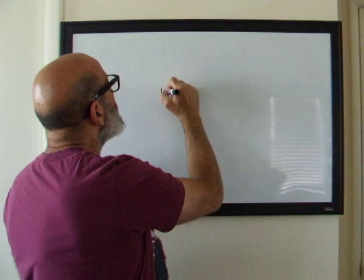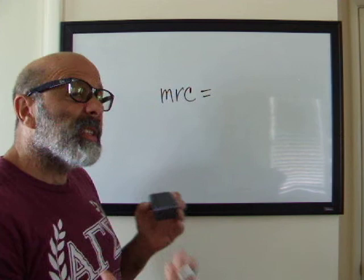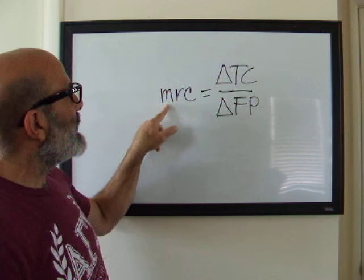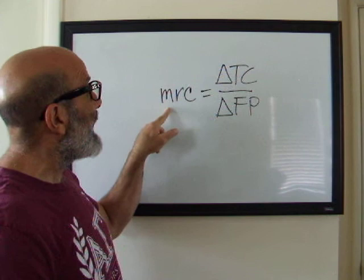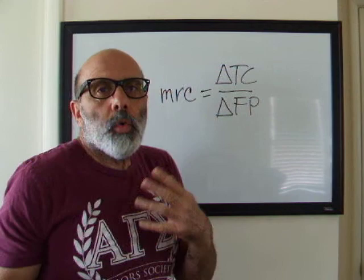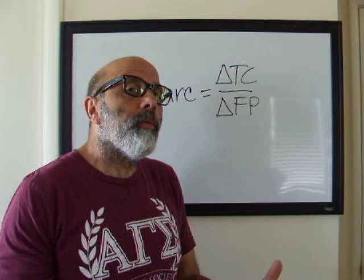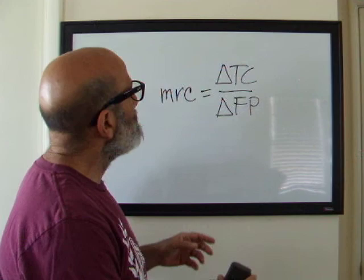Now that we've reviewed marginal cost and marginal physical product, let's take a look at marginal resource cost. Your book uses this notation: marginal resource cost is the change in total cost divided by the change in some factor of production. Marginal resource cost is the added cost from the added resource — it's the change in cost when we change a resource. It attributes that cost and output to a particular factor of production.